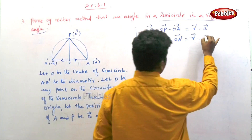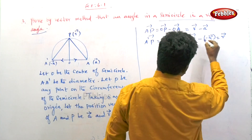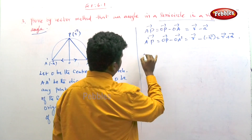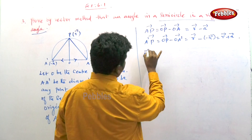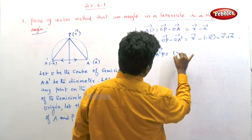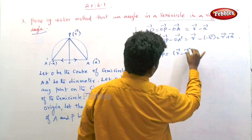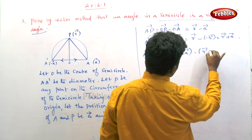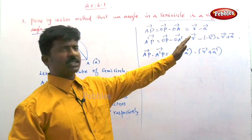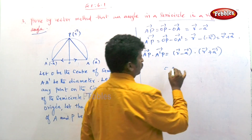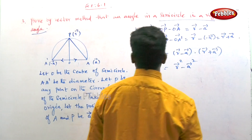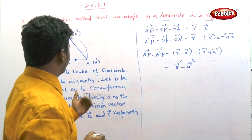So we compute the dot product: AP · A'P equals (r minus a) · (r plus a), which is of the form (a minus b)(a plus b) = a² minus b². This gives r vector squared minus a vector squared.